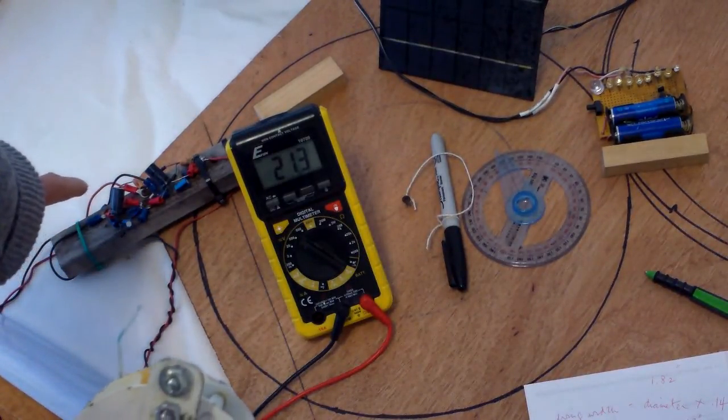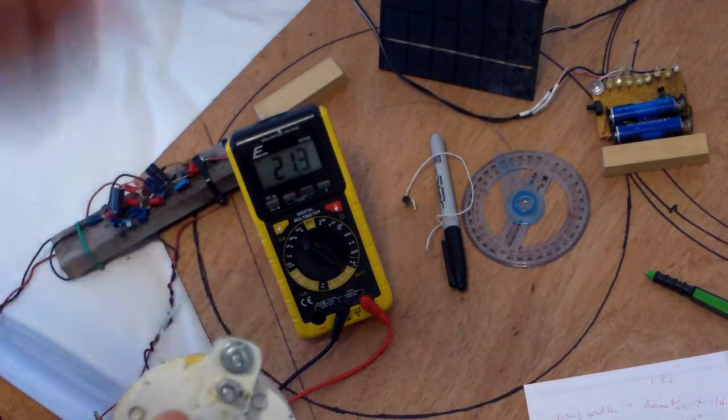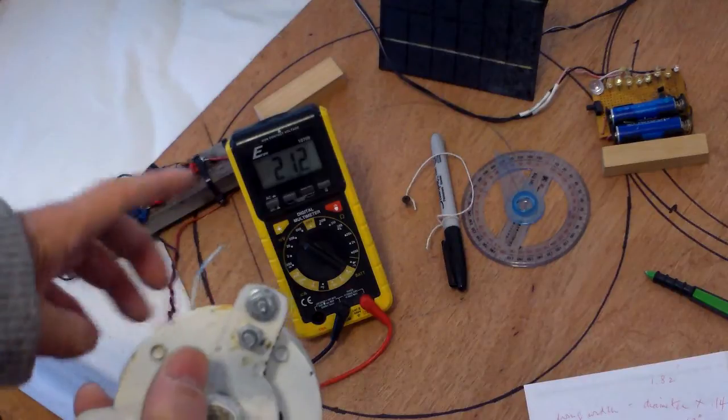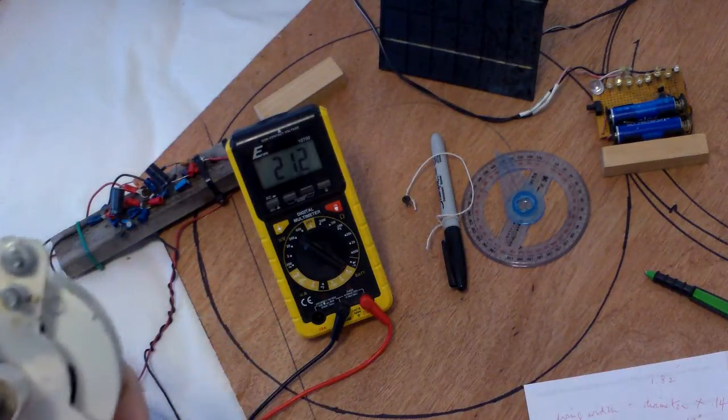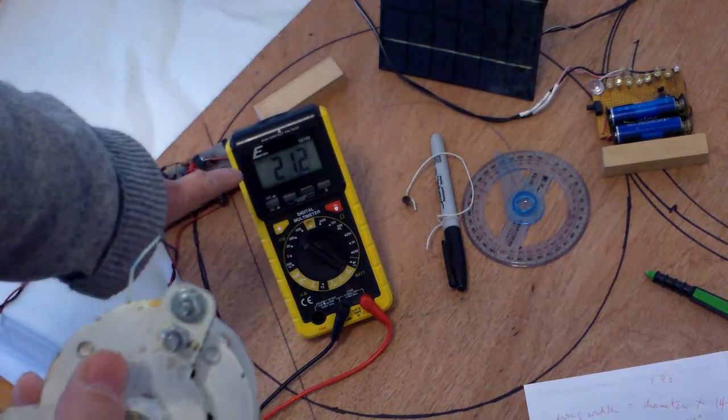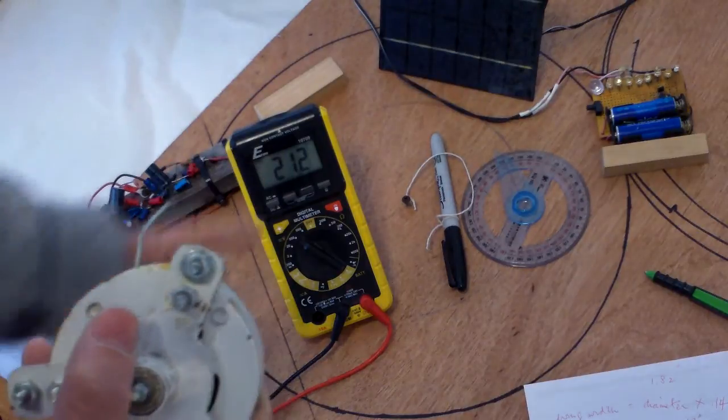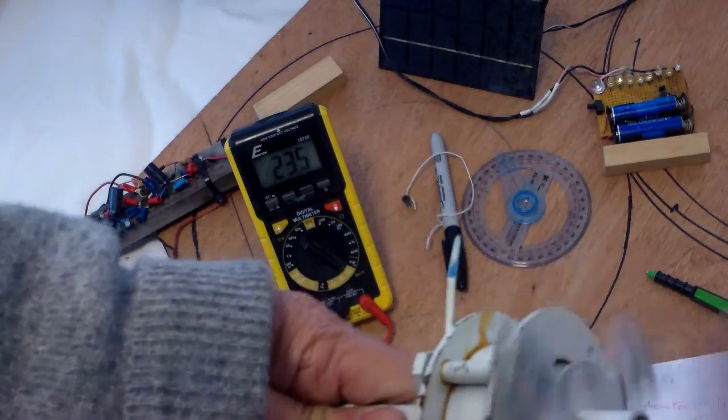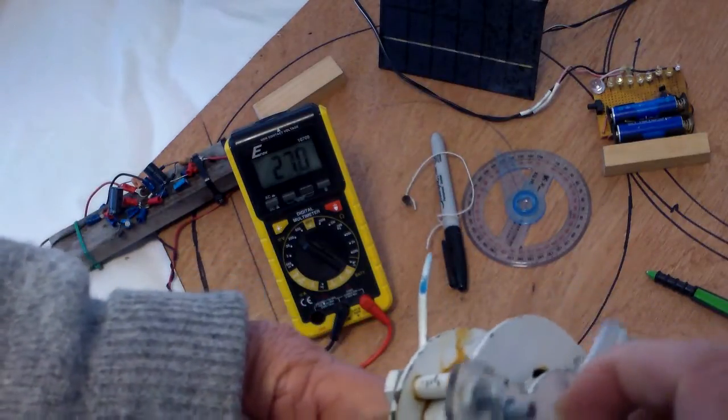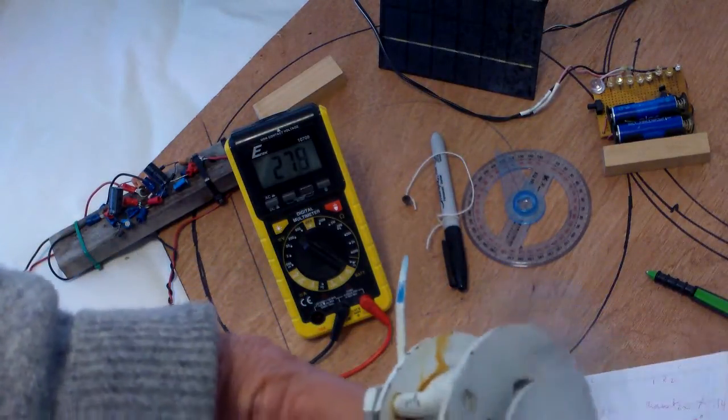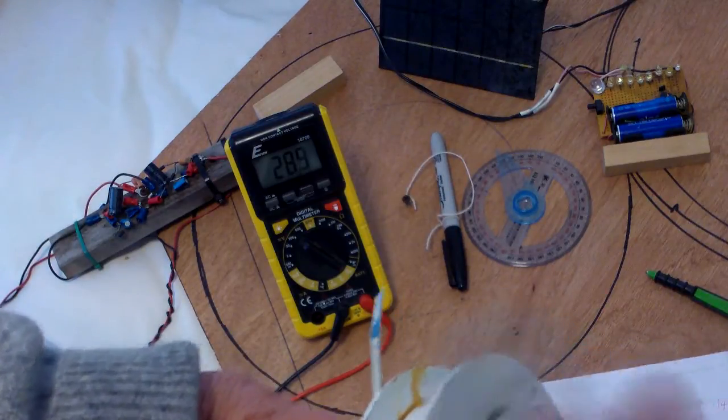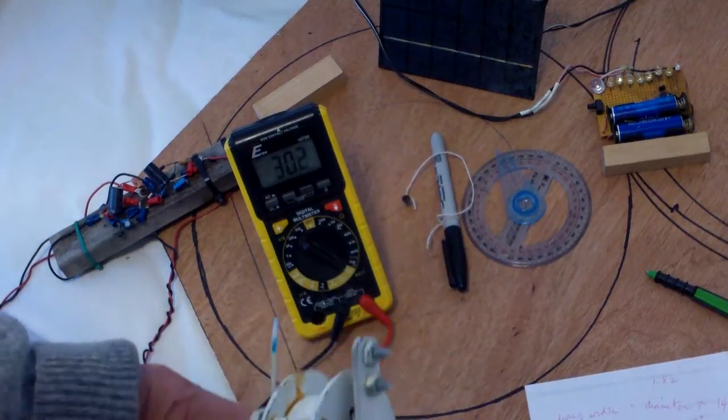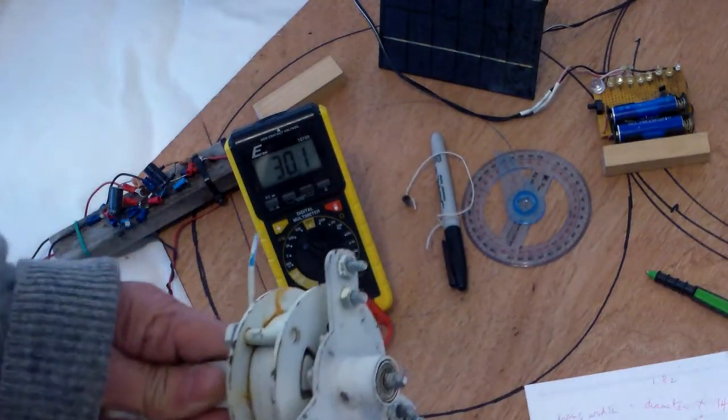The electronics that came with it has a voltage doubler, so the voltage generated is over 20 volts. You could get the alternator up to 39 volts—I've never been able to do that. 30 volts is about what I can do, so you keep turning and it comes up to about 30 volts.